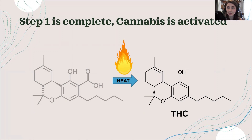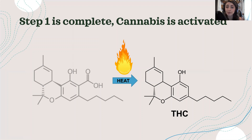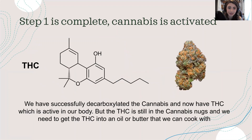After we take our flower and heat it — whether in the oven, sous vide, or an Ardent — the flower is going to look more brittle and crispy, which makes sense because we just heated it. We've now transformed our THCA into THC (all other cannabinoids are also being transformed from their acidic to non-acidic forms). Now that we have THC, it's still in the flower, so we need to get it from the nug into some sort of solvent we can bake with — most commonly cannabis butter or cannabis oils.